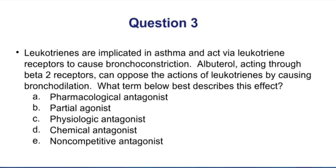Here's our third question. Leukotrienes are implicated in asthma, and they act via leukotriene receptors to cause bronchoconstriction. Albuterol, acting through beta-2 receptors, can oppose the actions of leukotrienes by causing bronchodilation. We want to know what term best describes this effect. Going back to our earlier discussion of the different types of antagonism — leukotrienes have their own receptor and albuterol has its own receptor.